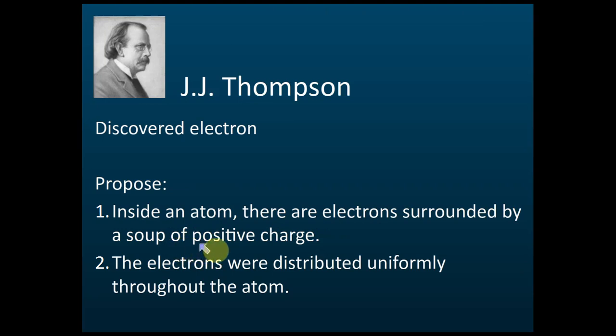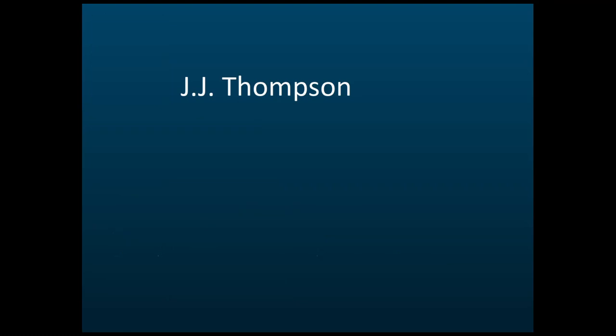Inside atoms there are electrons surrounded by a soup of positive charge. JJ Thomson says there is a cloud or cluster of positive charge inside the atom, but he couldn't explain where this positive charge comes from. He just says inside the atom there is a cluster of positive charge, and electrons are distributed uniformly inside the atom. That is JJ Thomson's model.